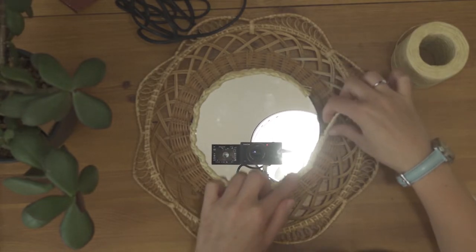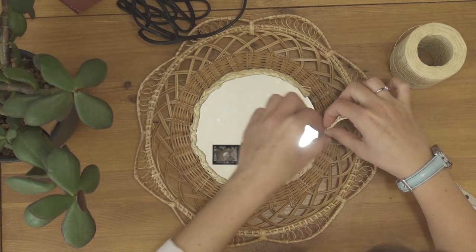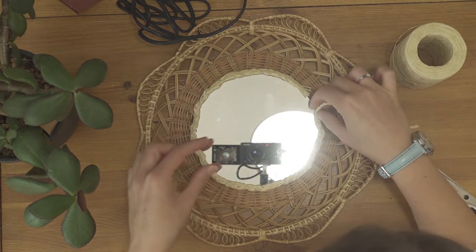I secured the braid with the hot glue, and with this step done the boho style mirror is complete.